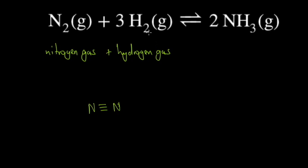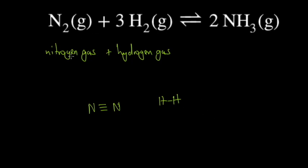Hydrogen gas is H2 — just like water is H2O, hydrogen exists as two atoms bonded together. The arrow type in the equation shows this is a reversible reaction, meaning the reaction goes in two directions — forward and backwards. So nitrogen and hydrogen are forming ammonia, but ammonia is also breaking down again to form nitrogen and hydrogen. This informs the conditions we need to yield more ammonia.